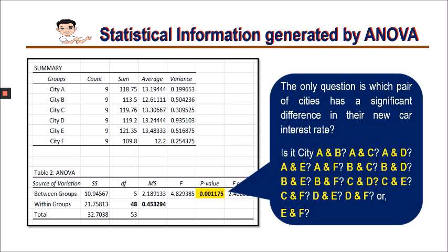The question now is: which pair of cities has a significant difference in their new car interest rate? Is it City A and City B, or City A and C, City A and D, City A and E, City A and F, or City B and C, and any possible pairings from these six different cities?